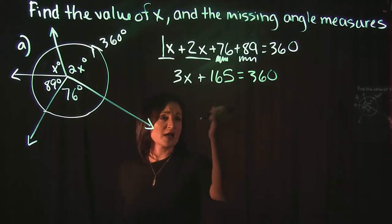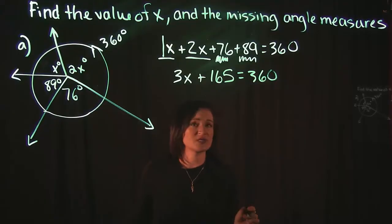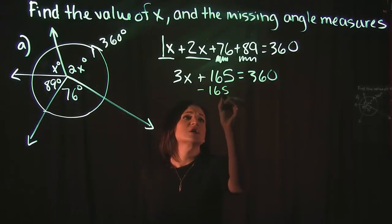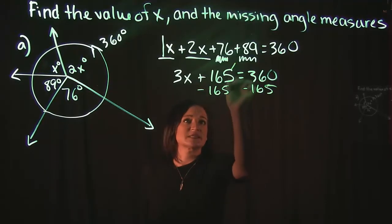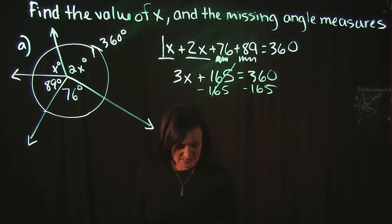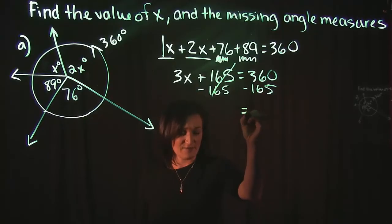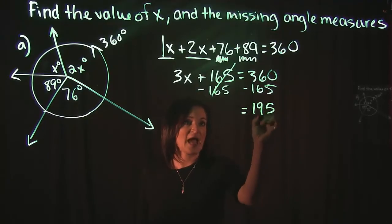If we're solving for x, the first thing we need to do is subtract 165 on both sides. So when we subtract 165 on both sides, let's see, I'm going to cheat and use my calculator here. 360 minus 165 is equal to 195.